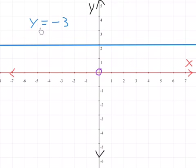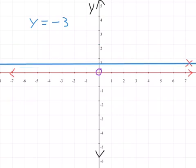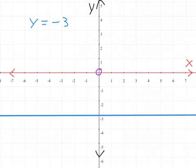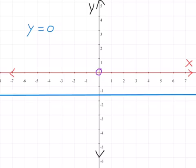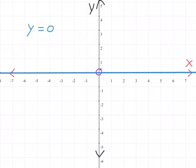The next one is y equals minus 3. That means we will have the line over there. All the values on this line is where y is equal to minus 3. The last one is y equals 0. That is, in other words, everywhere on the x-axis. Everywhere here, y is equal to 0.